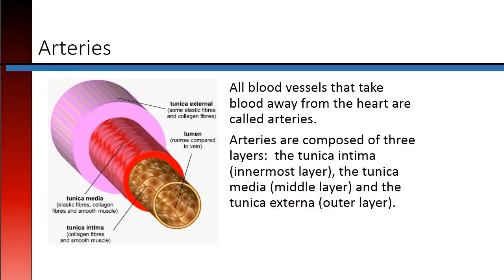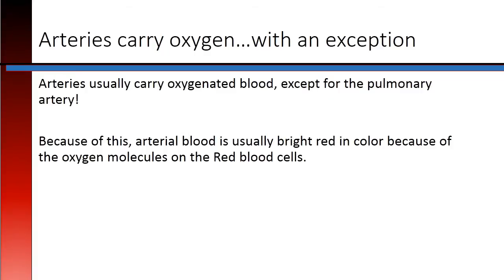Arteries are composed of three layers: the tunica intima, or the innermost layer; the tunica media, or the middle layer; and the tunica externa, or the outer layer. Arteries usually carry oxygenated blood, except for the pulmonary artery. Because of this, arterial blood is usually bright red in color, because of the oxygen molecules on the red blood cells.